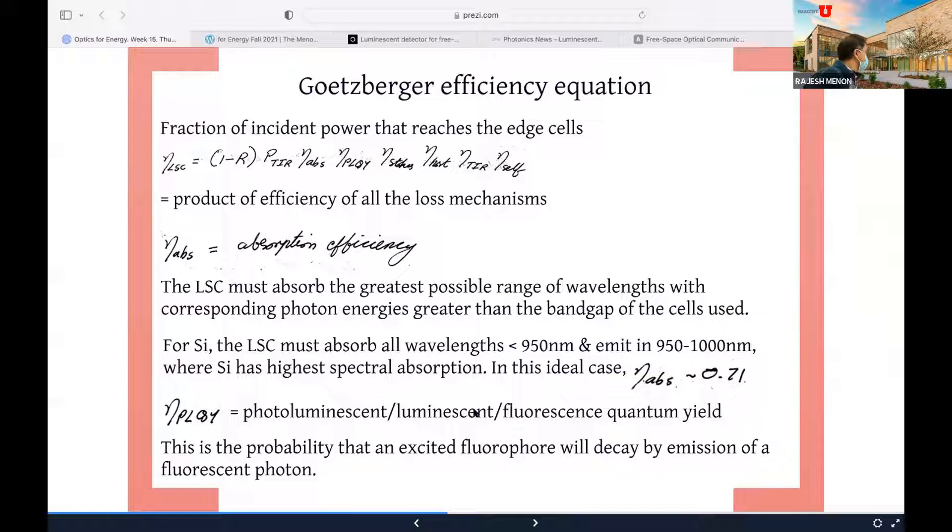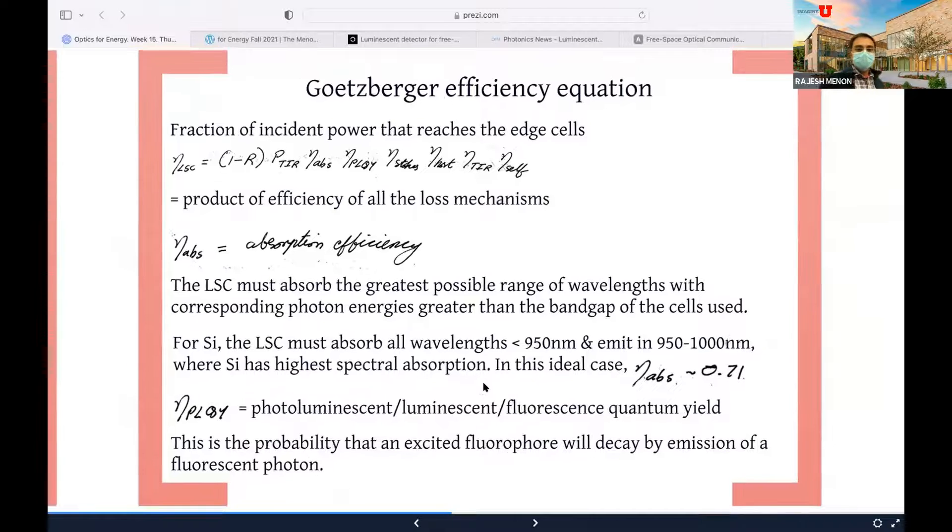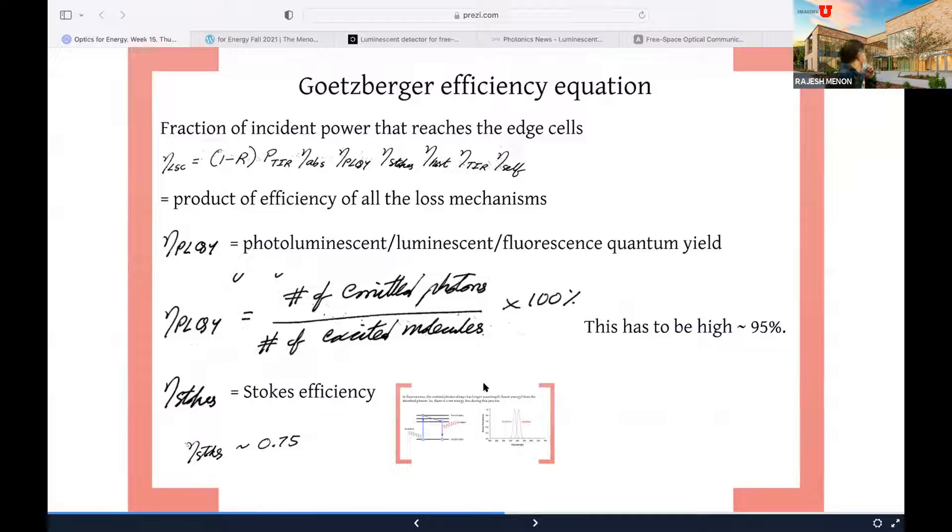The next term is the photoluminescence or luminescent or fluorescent quantum yield, which is basically saying, okay, if I absorb one photon, how many fluorescent photons do I emit? Or more accurate statement is if I absorb 100 photons, how many fluorescent photons do I emit? Is it 100? That will be 100% efficient. Is it 50? That will be 50% efficient, and so on. This is the probability that an excited fluorophore will decay by emission of a fluorescent photon. Now, this process is very important and interesting and useful to understand. What this means is basically the number of emitted photons divided by the number of excited molecules or the number of photons that are absorbed, which is the input, times 100. And generally, it's pretty high. If it's engineered properly, it's about 95%.